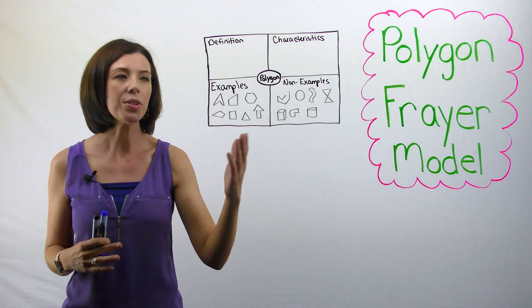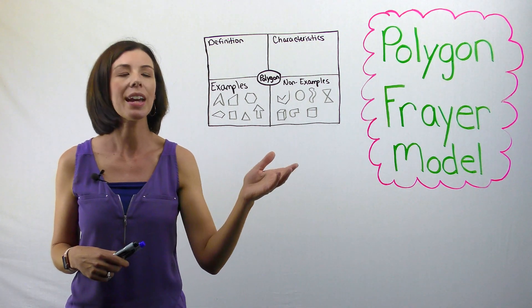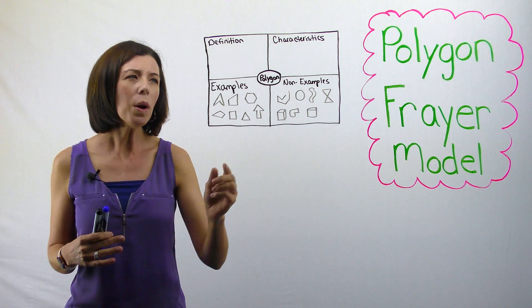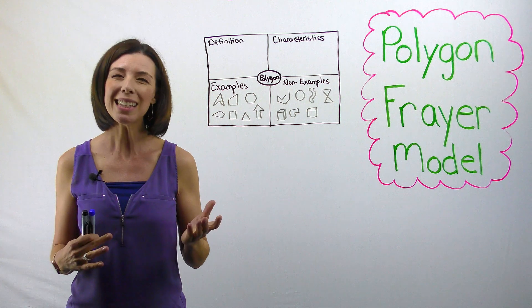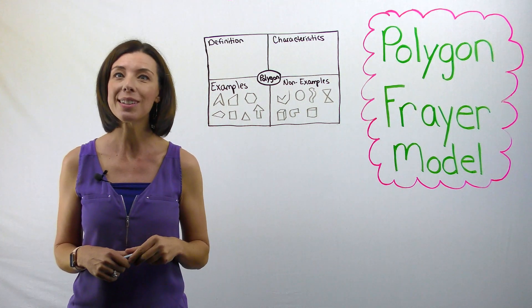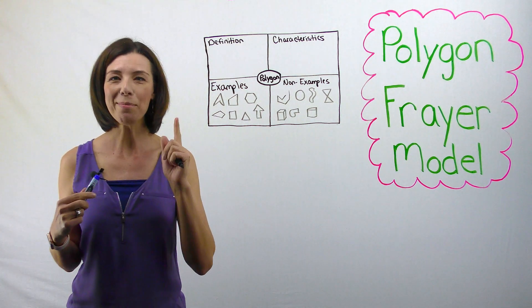Based on the drawings you see in front of you here of examples and non-examples, I want you to think about what would be the characteristics of polygons. See if you can jot down a few of these on your own. Okay, time's up. You got a couple?